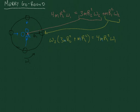And so now let's see what this would mean. We see that Omega-2 is equal to 4M R1 squared Omega-1 over 3M R2 squared plus M R1 squared.